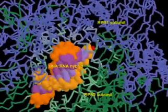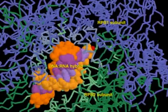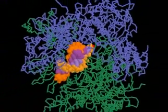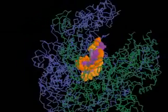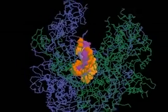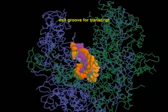In the active site of RNA polymerase II, a single-stranded DNA template is transcribed into a complementary RNA transcript. The initial product is a DNA-RNA hybrid from which the newly synthesized RNA strand is stripped off. It leaves the polymerase via an exit groove on the protein surface.